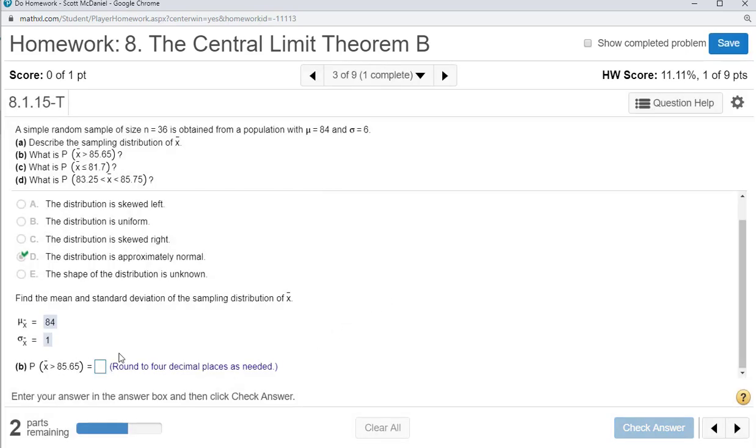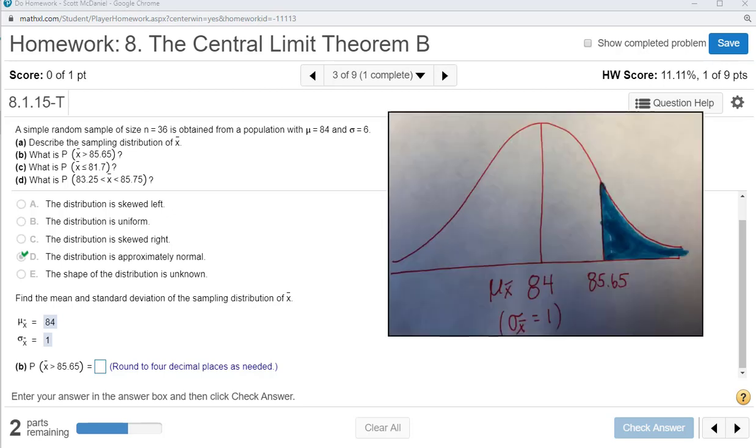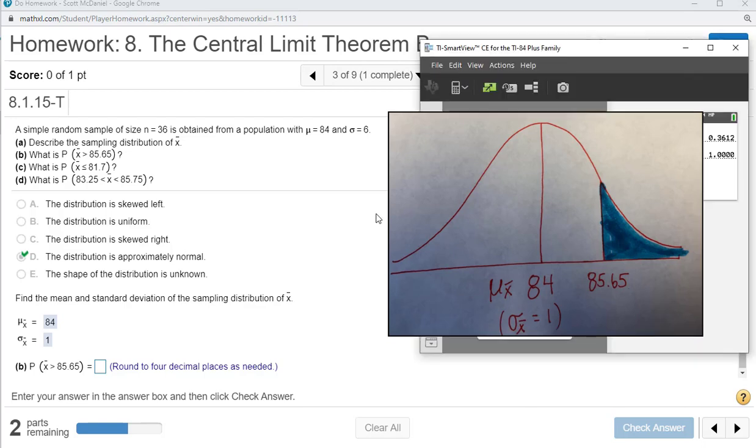Now let's find each of these. Find the probability that X bar is greater than 85.65. The first thing you want to do is draw this out. As you see here, we have the mean at 84. Right below that, I usually put in parentheses standard deviation is 1, and then I put 85.65 and shade to the right. I'll show you this on the TI and on StatCrunch. So pull up the TI.